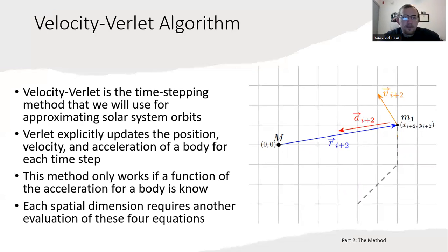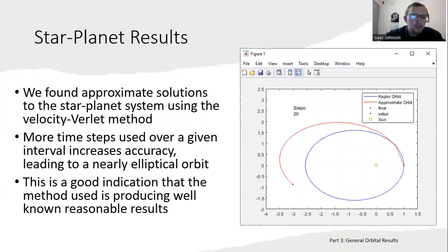This process can be iterated continually until you have some approximate orbit. However, each spatial dimension requires another evaluation of these four equations. So for each planet, it takes 12 equation evaluations per time step—four equations times three dimensions.